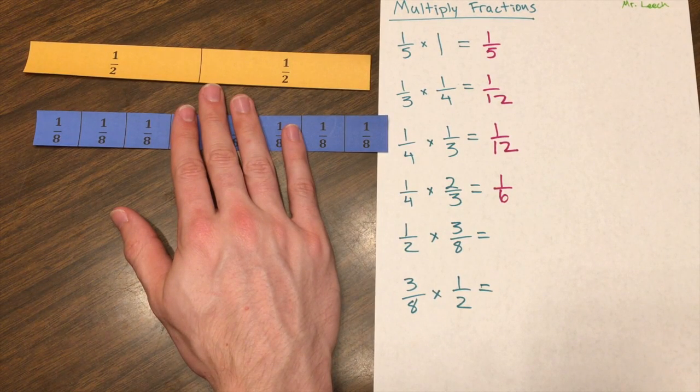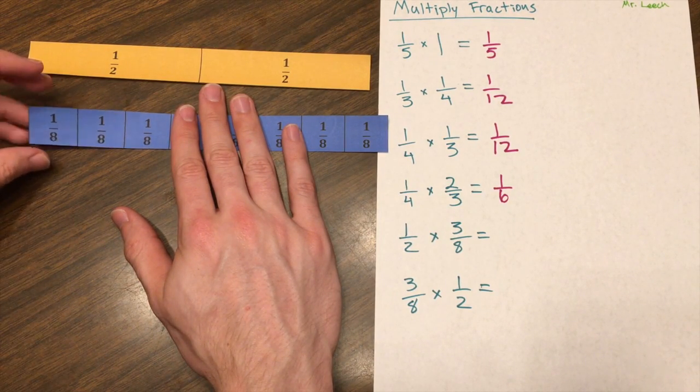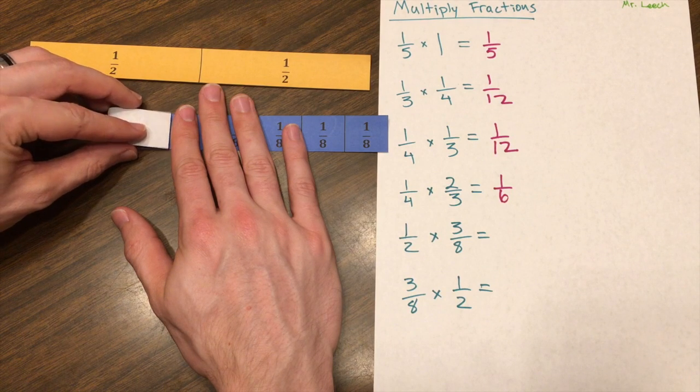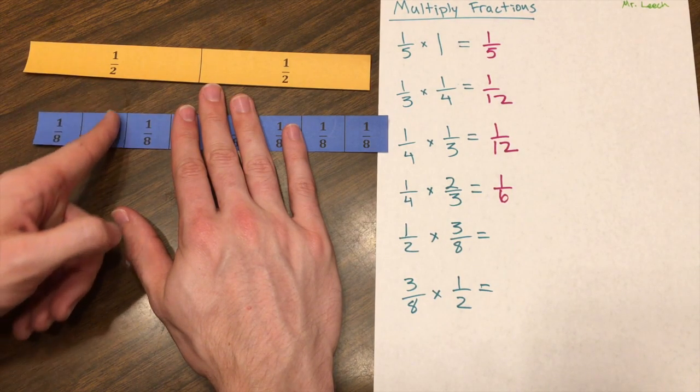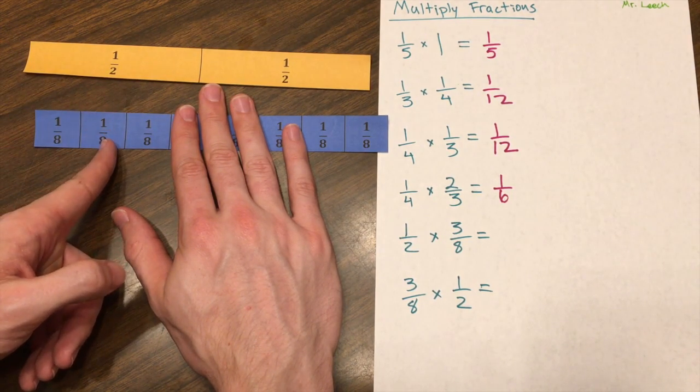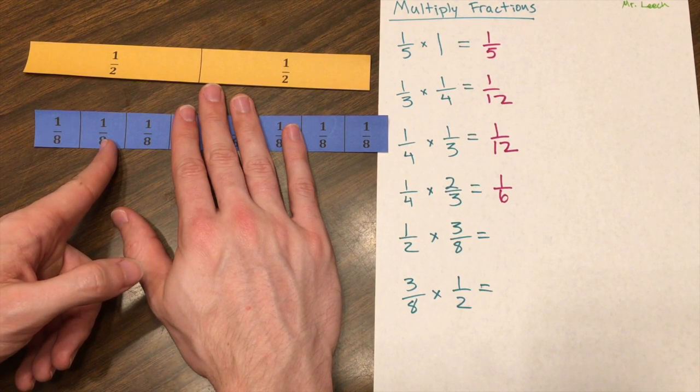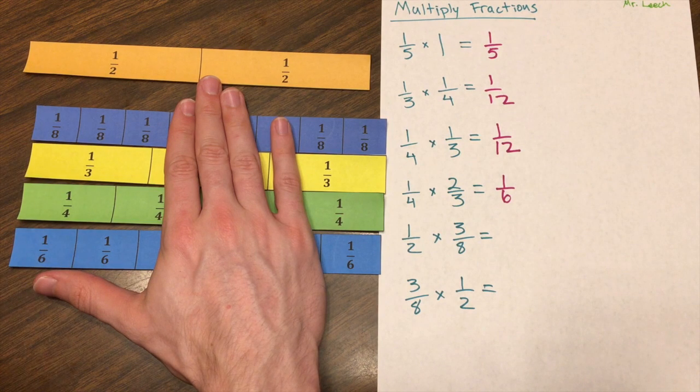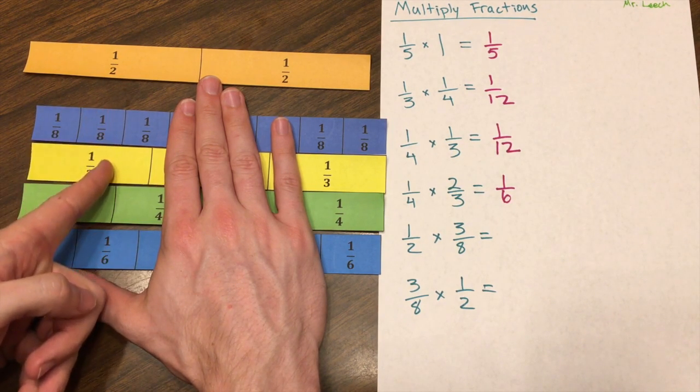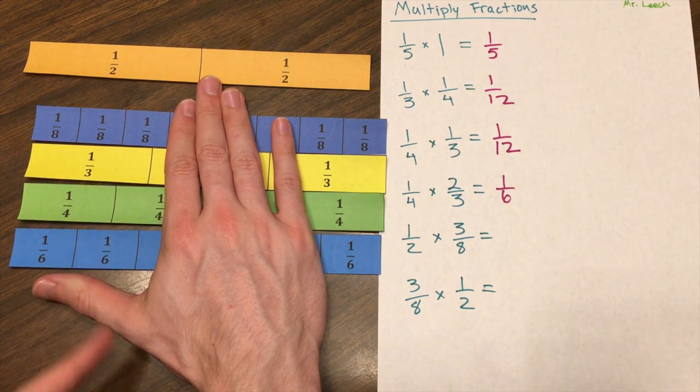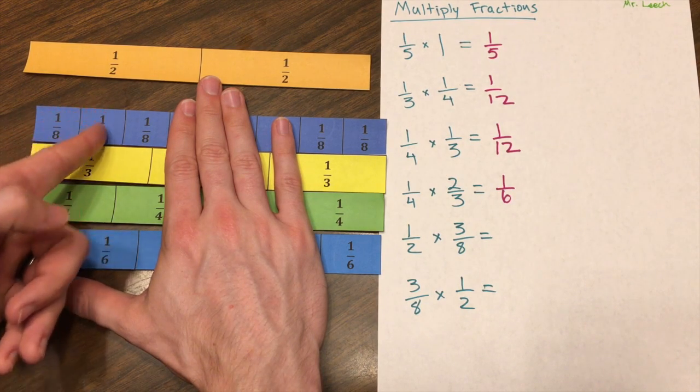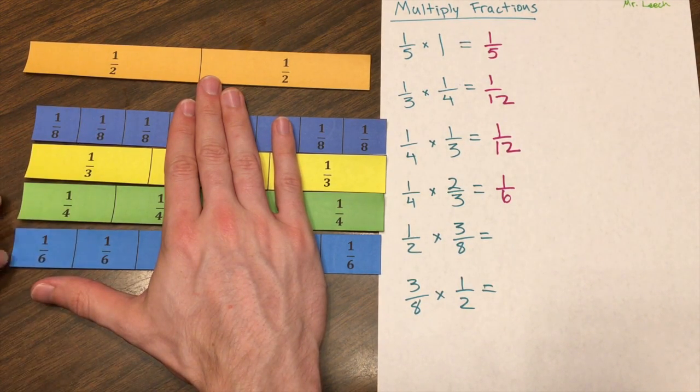So what is one-half of three-eighths? If I wanted to fold this strip, I could fold it right there. And so I'm looking for this line right here. So I'm going to play with my strips to see which would equal that. Looking at the fractions that are larger than one-eighth, none of them line up exactly where I needed to at half of three-eighths. So it's not going to be any of these.